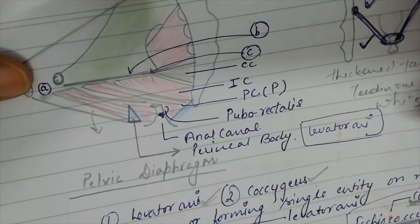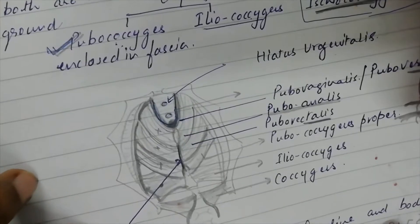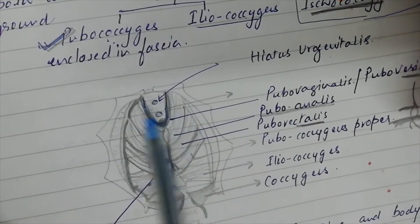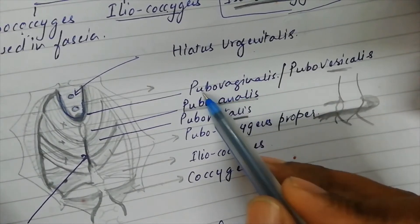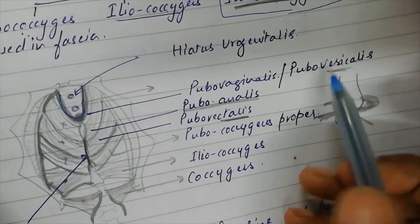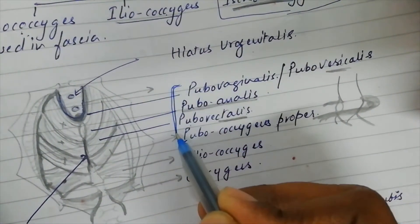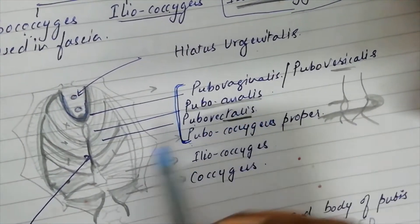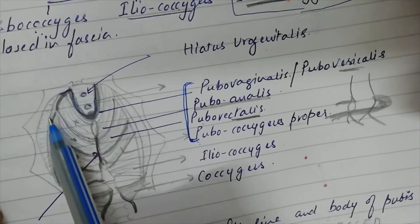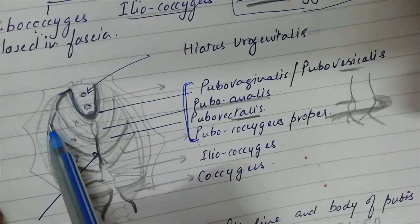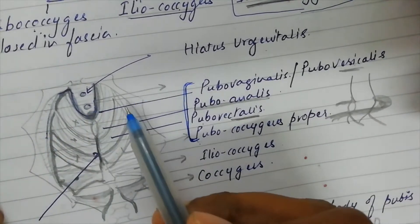Regarding the origin of each individual component of Pubococcygeus, as better seen in a horizontal section showing the origin of the different component parts — Pubococcygeus originates from the white line, specifically the anterior part of the white line, which is the thickened part of the obturator fascia in the lateral pelvic wall.